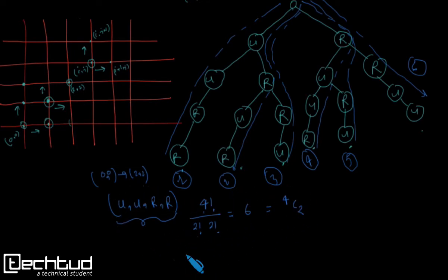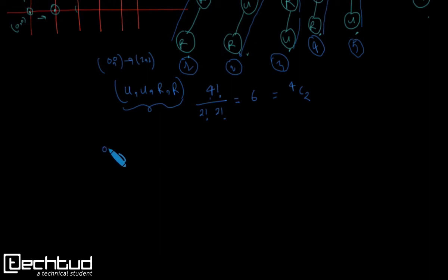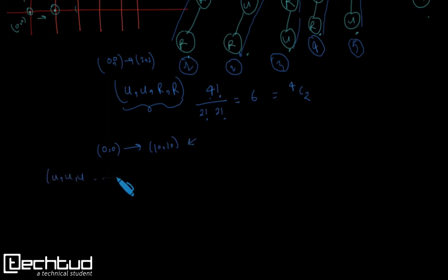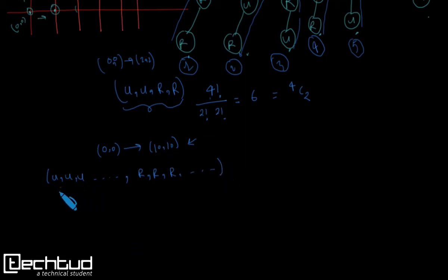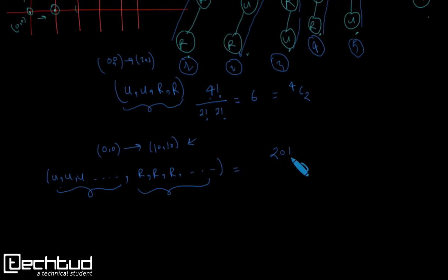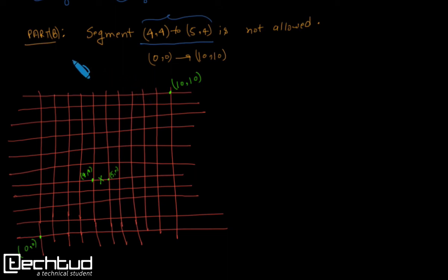Our original question was to find all paths from 0,0 to 10,10. We need to take 10 up moves and 10 right moves. In every distinct path we have 20 total moves, with 10 of one type and 10 of another, so the answer is 20C10.